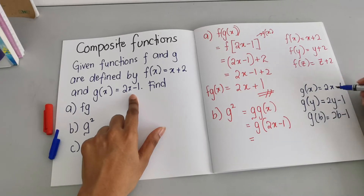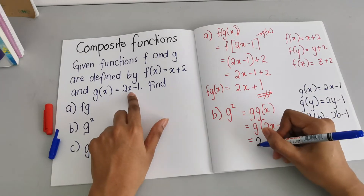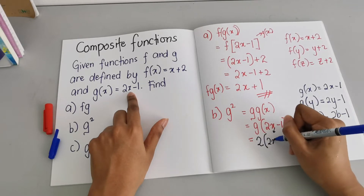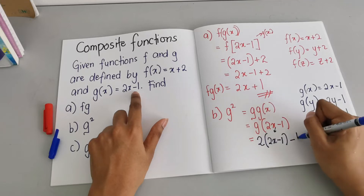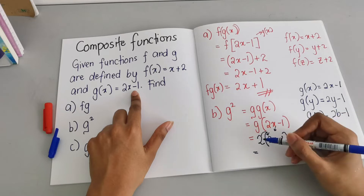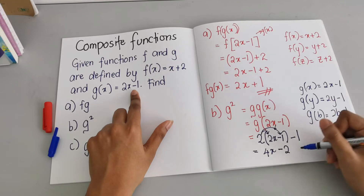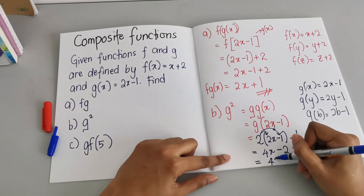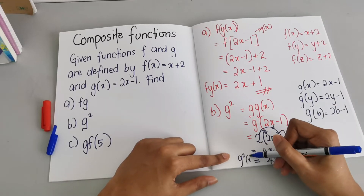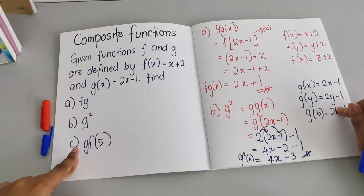Since inside we have (2x − 1), we substitute it in: 2(2x − 1) − 1. Expanding: 2 × 2 = 4x, 2 × (−1) = −2, then −1, so we obtain 4x − 3. This is our g²(x) function.